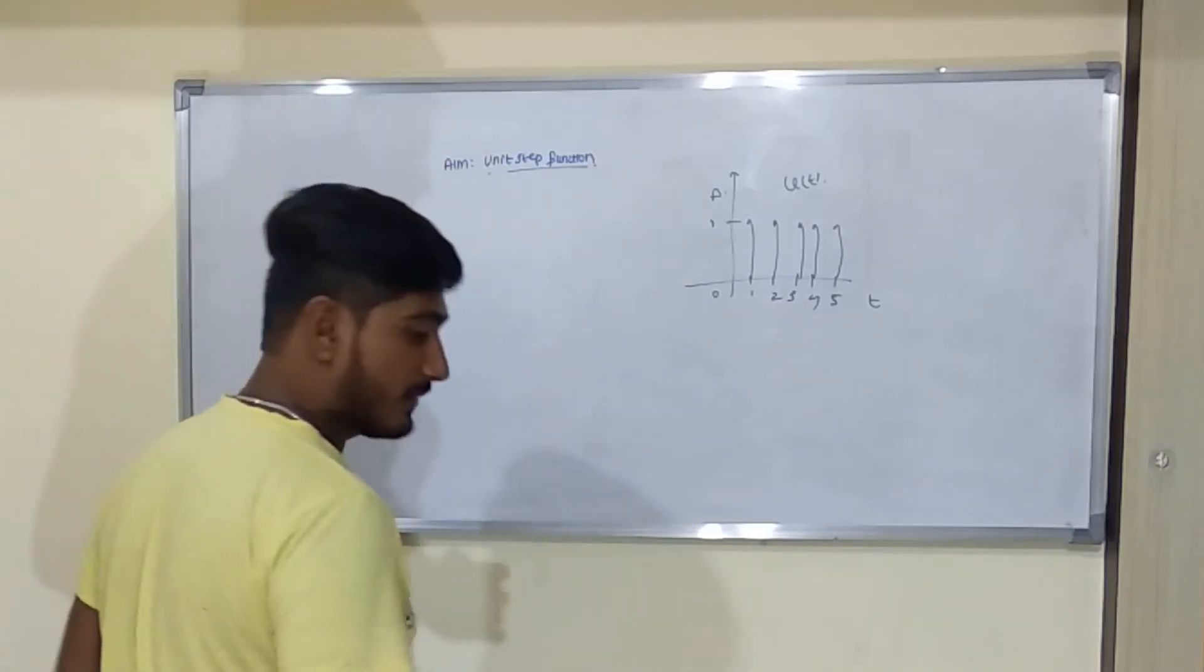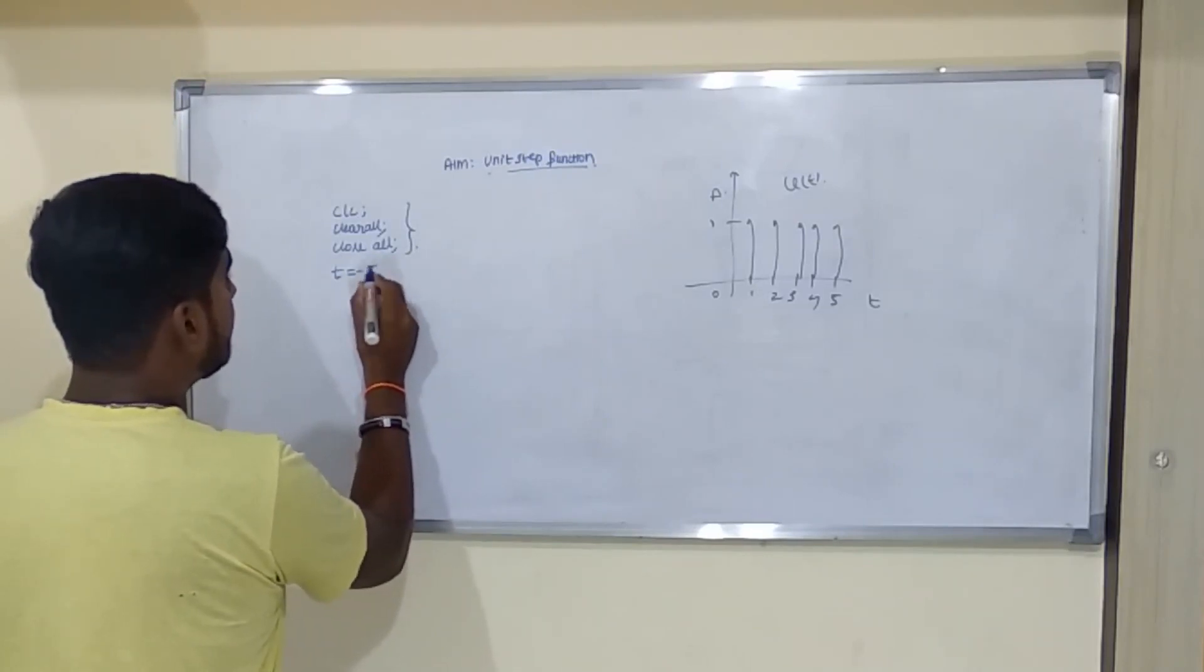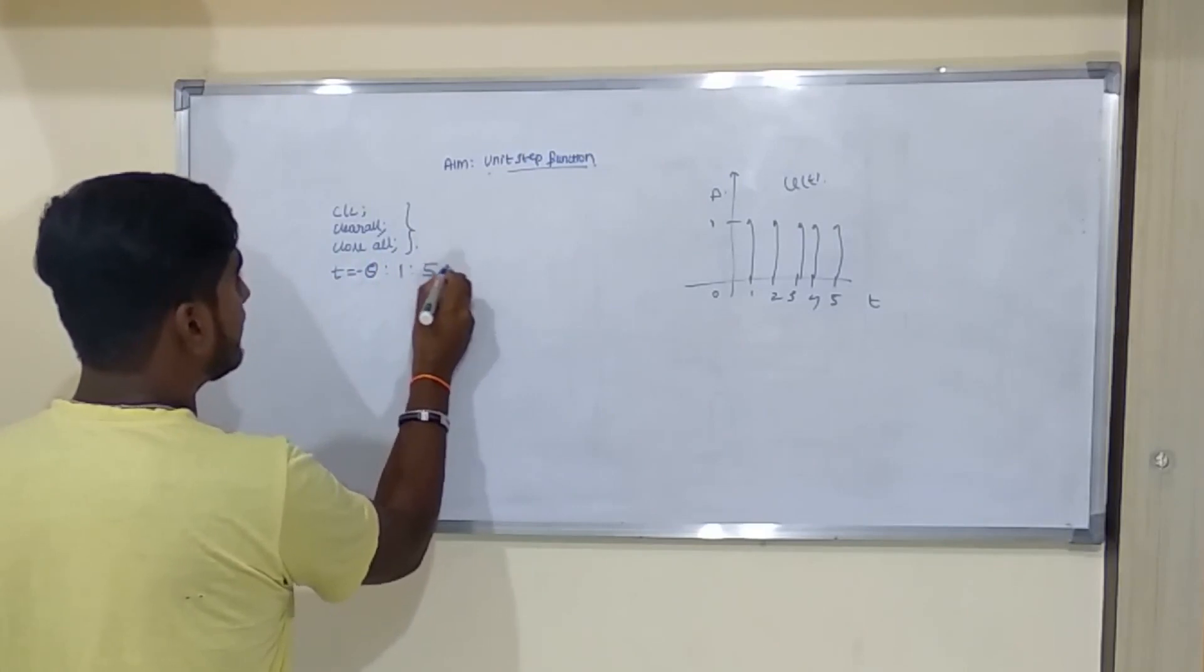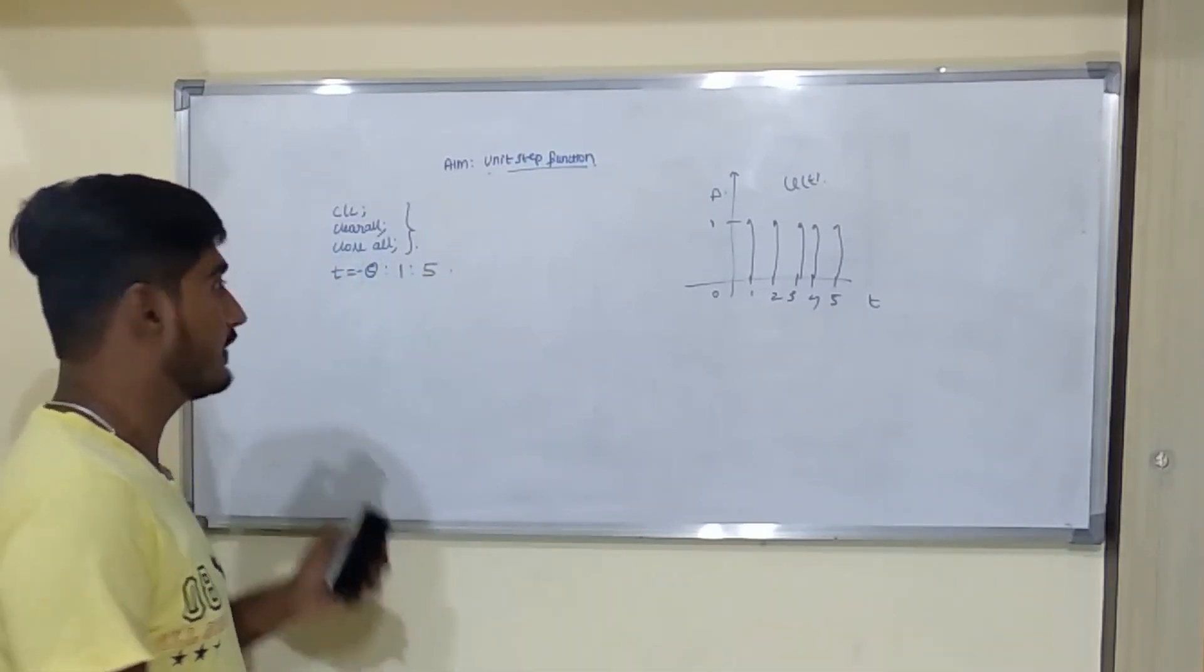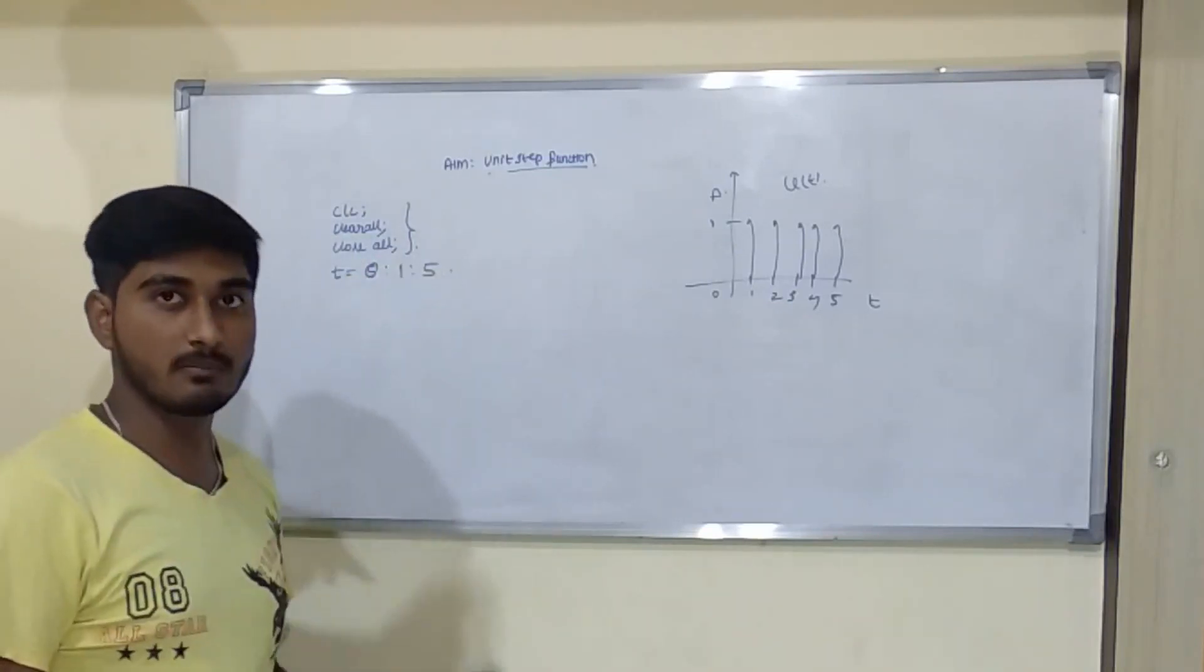So after doing all this initialization, we will come into the main point where we need to take a time interval. I will take it as 0 to 1 to 5. Why? Because the negative values are not defined. That's why I will take t from 0 to 1 to up to 5.